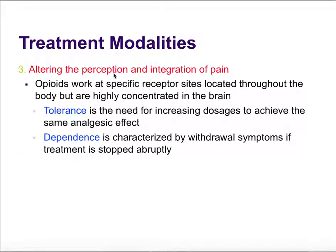Third, alter the perception and integration of pain — this is where opiates come in. Opiate receptors are highly concentrated in the brain. An important concern is tolerance, where increasing dosages are needed to achieve the same analgesic effect because the body has started to tolerate the opiate. Dependence is characterized by withdrawal symptoms if treatment is stopped abruptly — people can become dependent where they constantly need the medication.